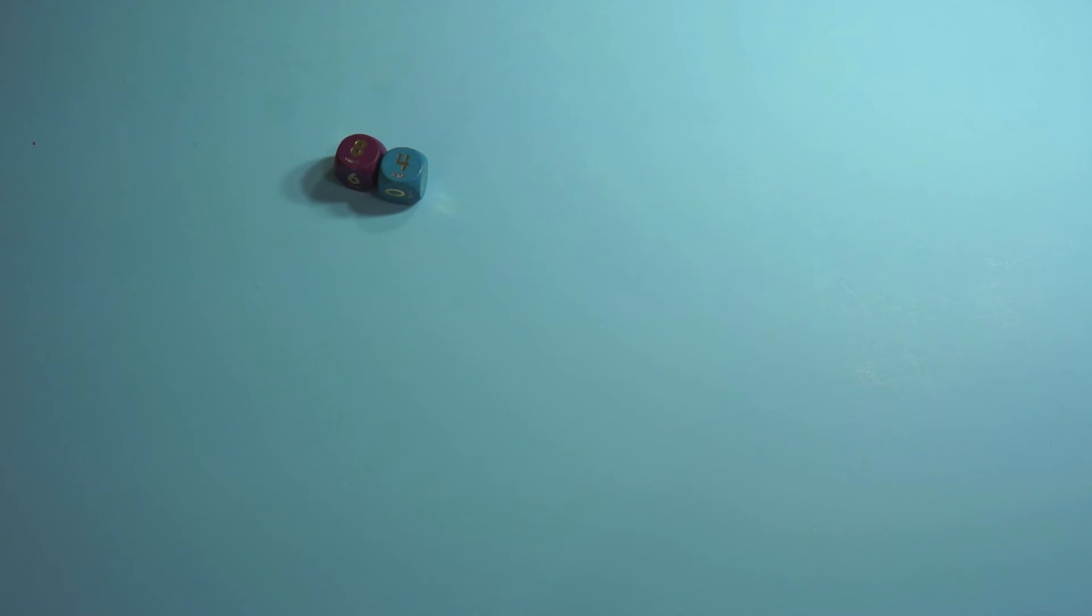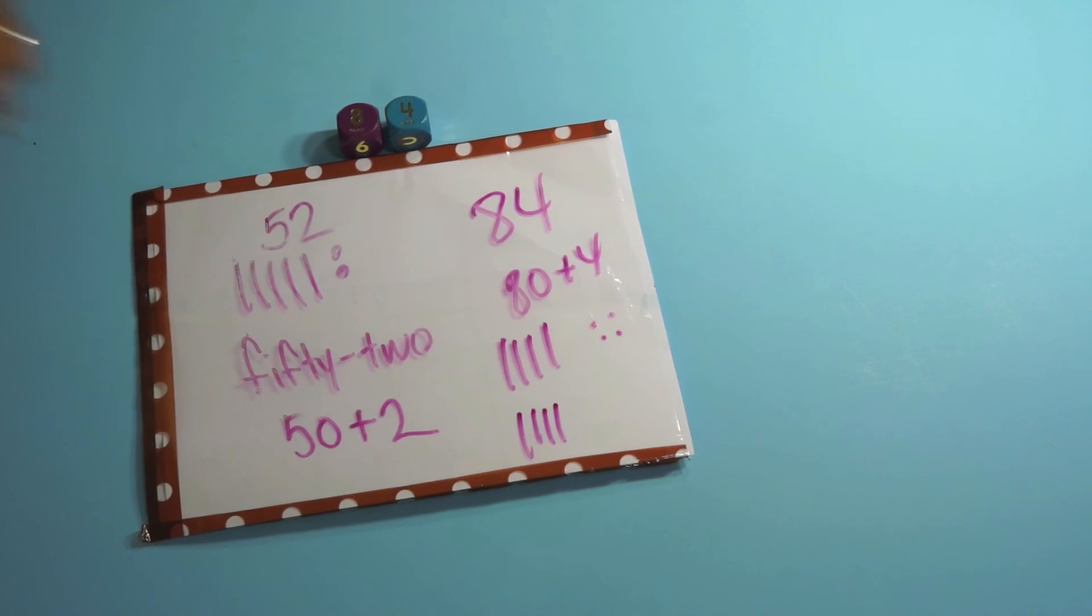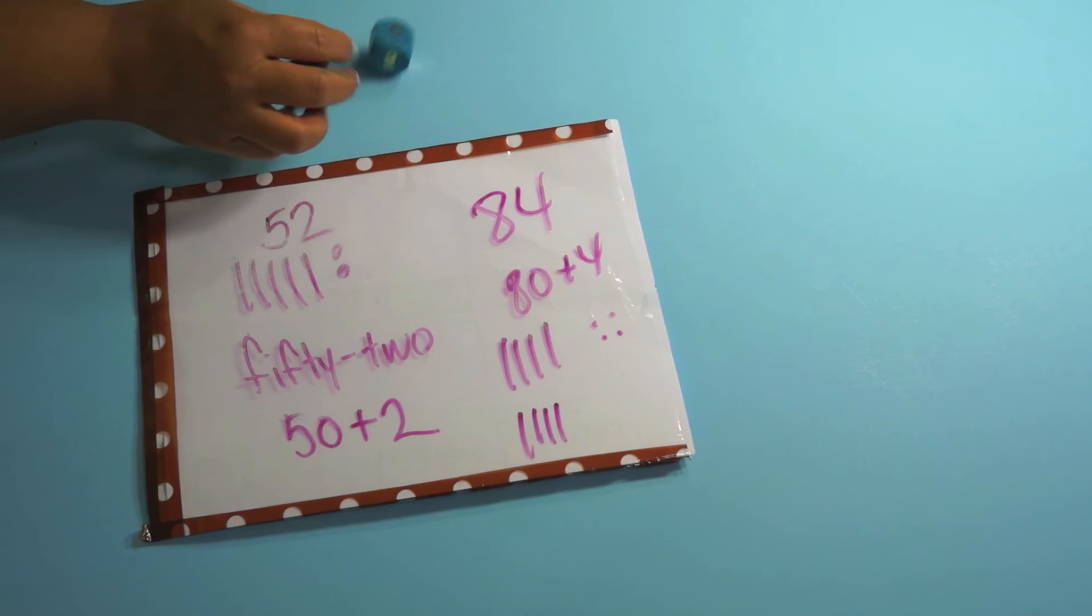So this is eight tens and four ones. And then what I would have the kids do is I would have the kids actually draw that out. So they'd have 84 and they'd have 80 plus four and they would draw out eight tens and four ones. So I like the place value dice, I use them a lot just as one of the centers.